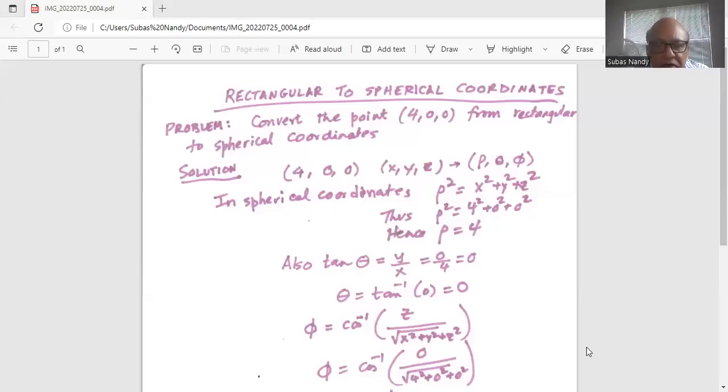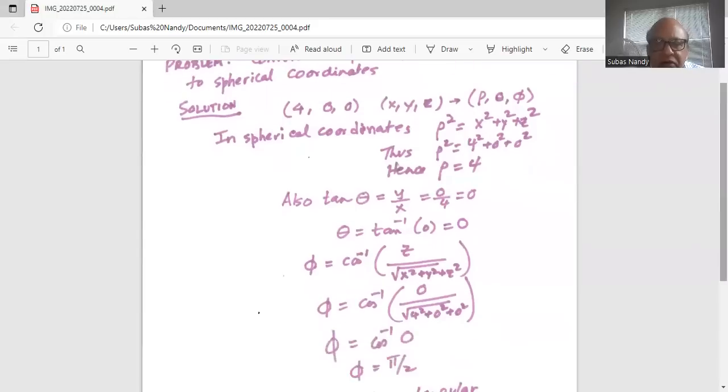Now phi is equal to cosine inverse z divided by square root of x square plus y square plus z square. So phi is equal to cosine inverse. In our case z is 0, so it is cosine inverse 0. So phi is equal to pi by 2.